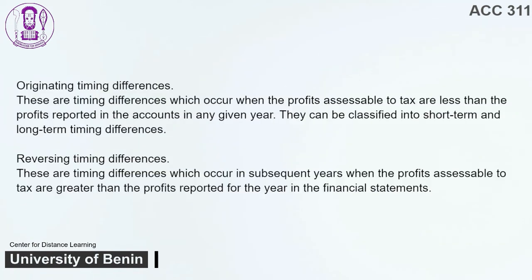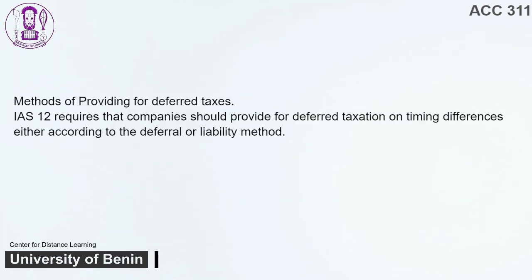Originating Timing Differences. These are timing differences that occur when the profits accessible to tax are less than the profits reported in the accounts in any given year. They can be classified into short-term and long-term timing differences. Reversing Timing Differences. These are timing differences that occur in subsequent years when the profits accessible to tax are greater than the profits reported for the year in the financial statements. Methods of Providing for Deferred Taxes. IAS 12 requires that companies should provide for deferred taxation on timing differences either according to the deferral or liability method.